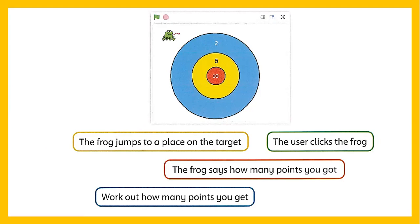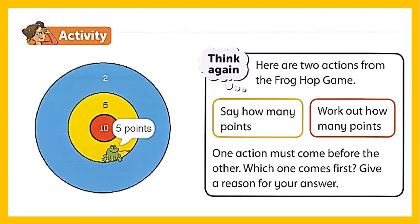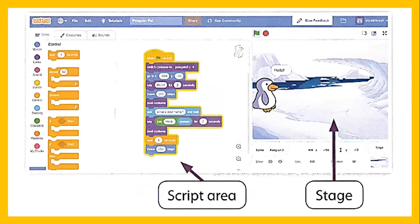So when you click on the frog, you will get points. This is the short program — you have to find the actions in sequence. Here is the activity: there are two actions from the Frog Hop game — 'say how many points' and 'work out how many points.' You have to decide which action should come first.